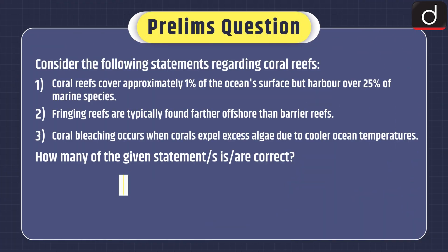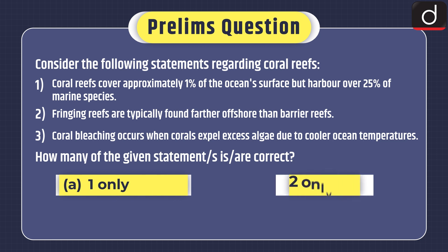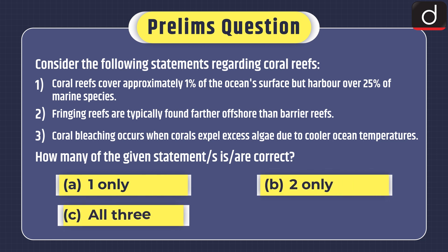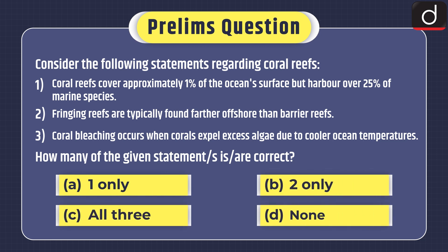Now for a prelims-based practice question: Consider the following statements regarding coral reefs — (1) Coral reefs cover approximately one percent of the ocean's surface but harbor over 25 percent of marine species. (2) Fringing reefs are typically found farther offshore than barrier reefs. (3) Coral bleaching occurs when corals expel excess algae due to cooler ocean temperatures. How many of the given statements are correct: only one, only two, all three, or none?